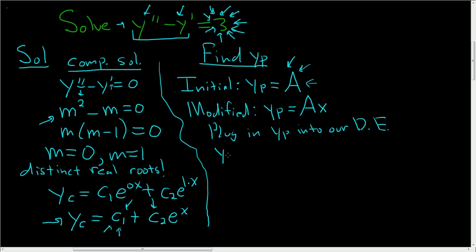So the first derivative of yp is just a, and the second derivative of yp is just 0. So plugging these into the differential equation, we get 0, that's our second derivative right here, minus y prime. So that's just going to be a, and that's equal to 3.